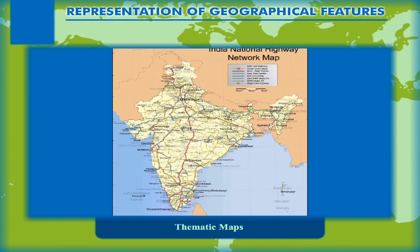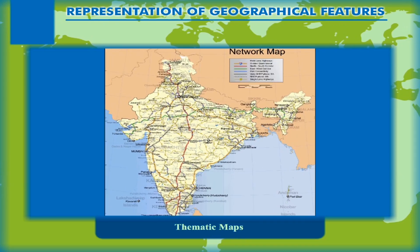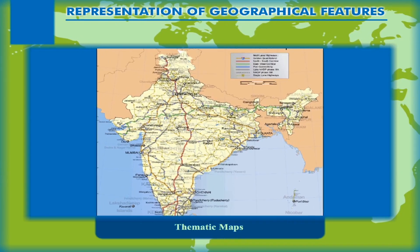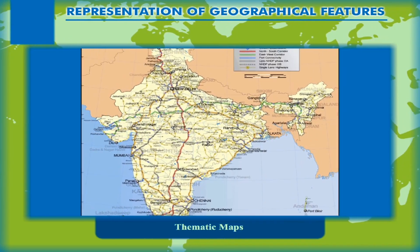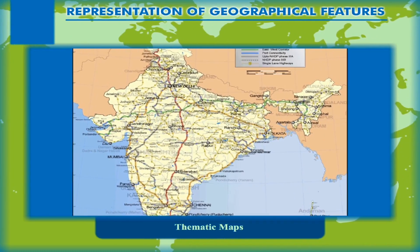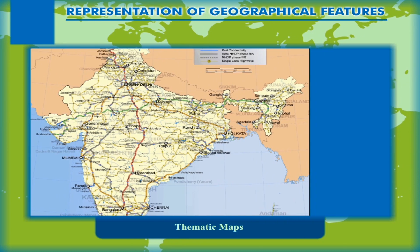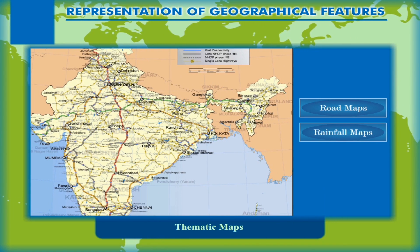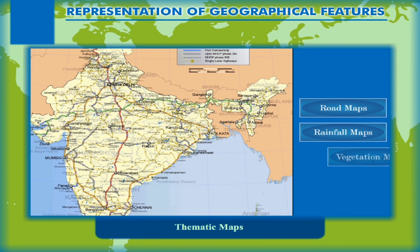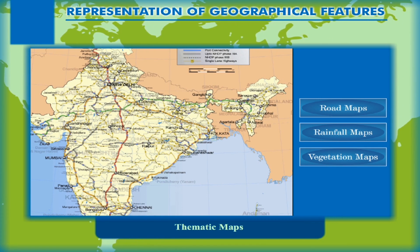Thematic maps, as the name suggests, have a specific theme or subject. They may be road maps, rainfall maps, vegetation maps, etc.